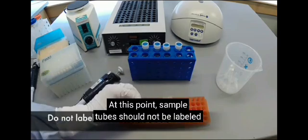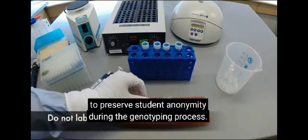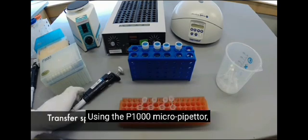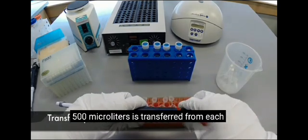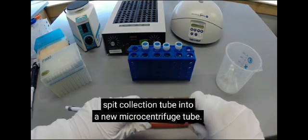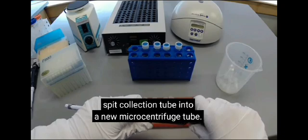At this point, sample tubes should not be labeled to preserve student anonymity during the genotyping process. Using the P1000 micropipetter, 500 microliters is transferred from each spit collection tube into a new microcentrifuge tube.